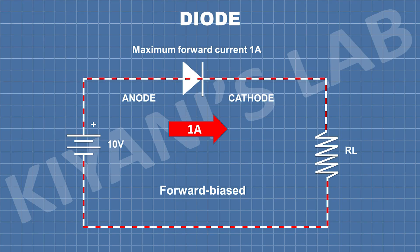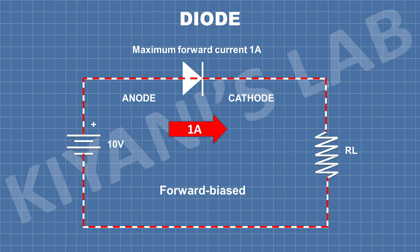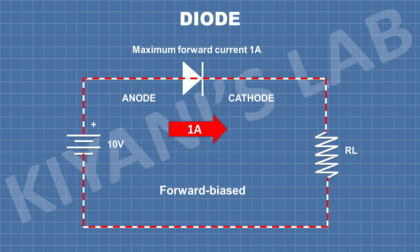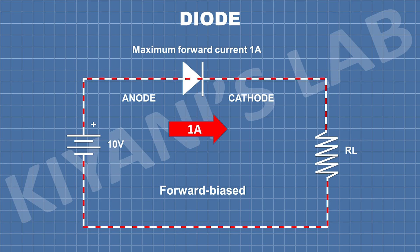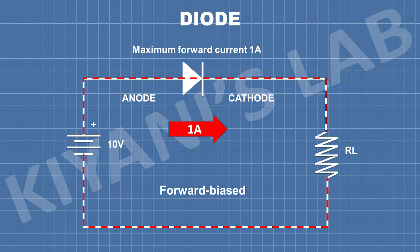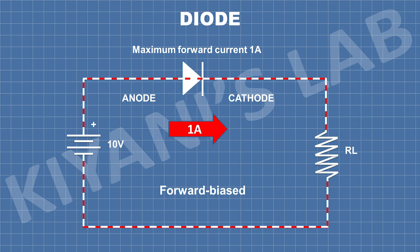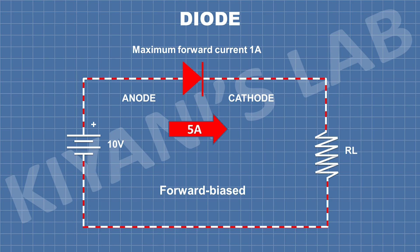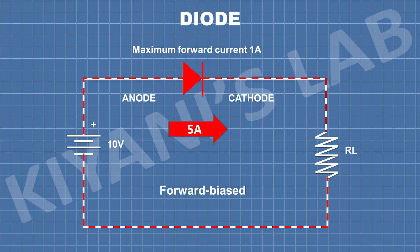Every diode also has a maximum forward current. If the current flowing through the diode is less than the maximum forward current, nothing will happen to the diode. But if the current flowing through the diode is more than the maximum forward current, the diode heats up and this will damage the diode.